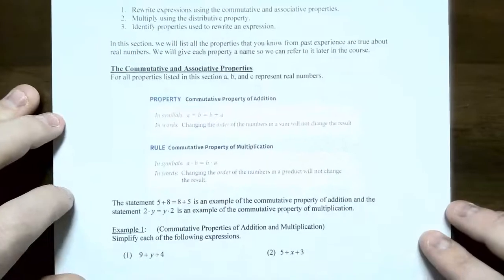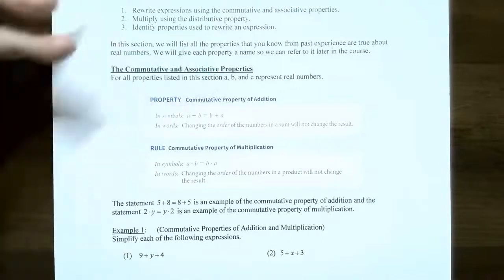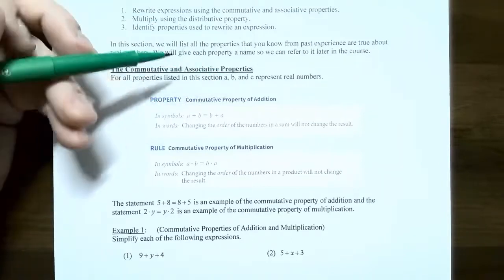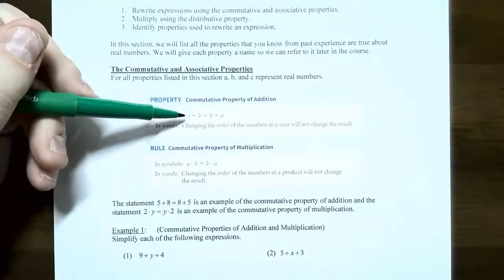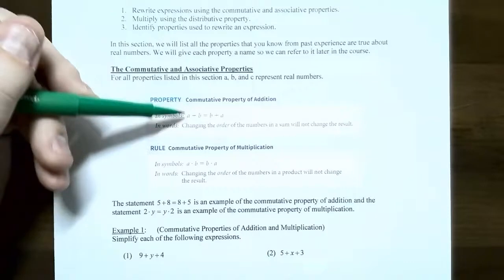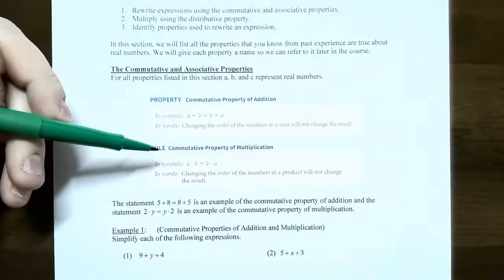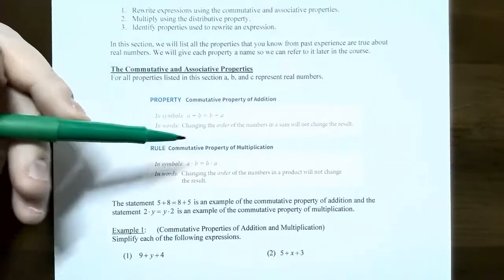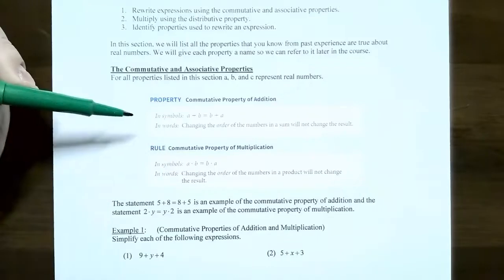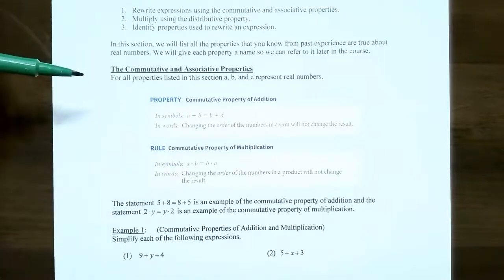The commutative and associative properties. If A, B, and C are real numbers, the commutative property of addition means A plus B will always give you the same answer as B plus A — it doesn't matter what order you add, the sum will remain the same. The commutative property of multiplication means A times B will always give you B times A. If you change the order in which you multiply, the product will always be the same.